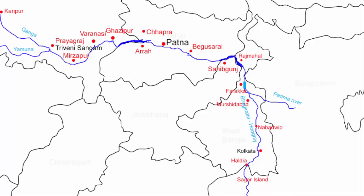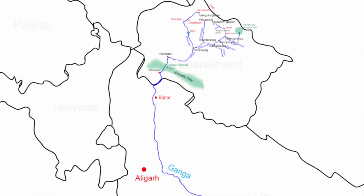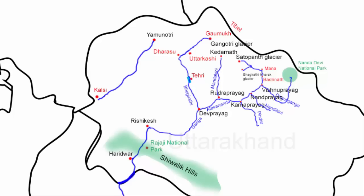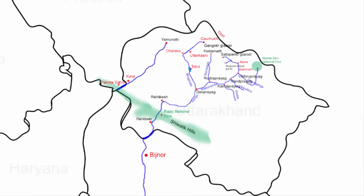Now let's look at the important right bank tributaries. The first is river Yamuna, also called Jamuna. The source of Yamuna lies in the Yamunotri glacier, which is 40 to 50 kilometers west of Gangotri glacier. Initially Yamuna flows southwest towards the town of Kalsi at the Uttarakhand and Himachal border, flowing along that border for about 30 kilometers before exiting the Himalayan foothills.